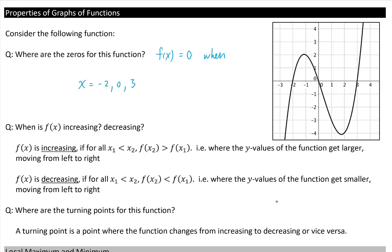When is this function increasing, and when is it decreasing? f(x) is increasing if for all x₁ less than x₂, f(x₂) is greater than f(x₁). All this means is where the y values of the function get larger, moving from left to right.